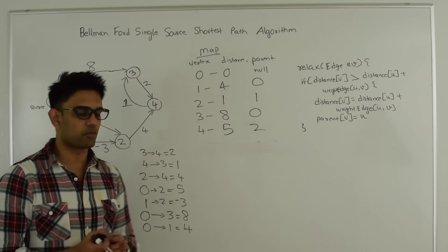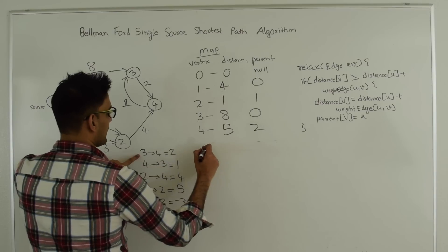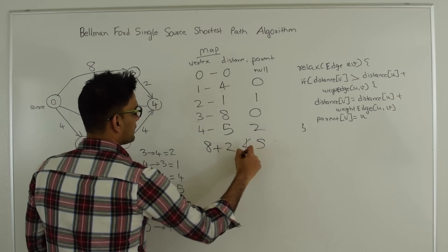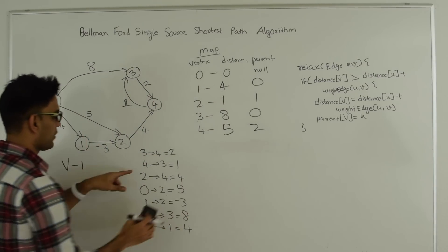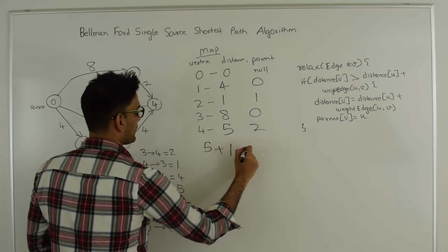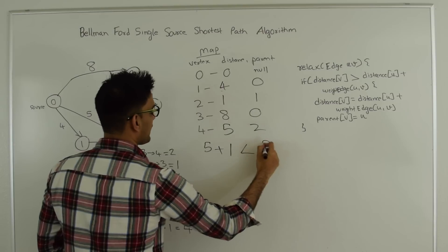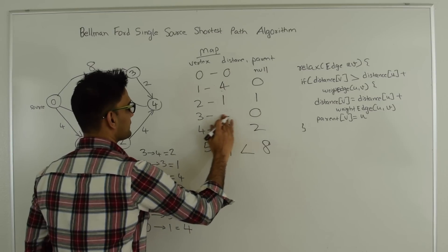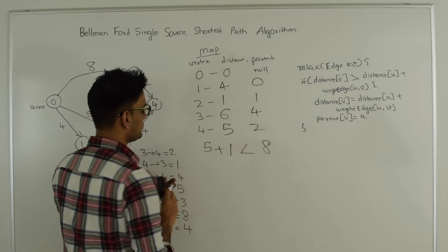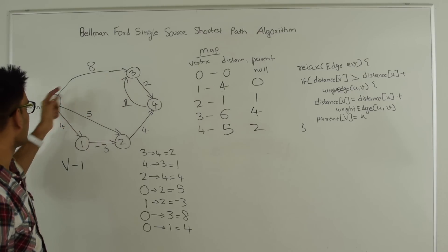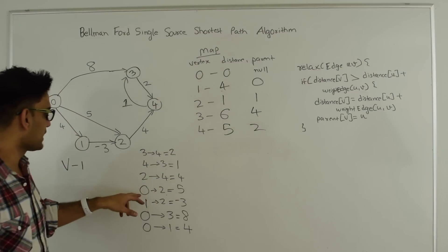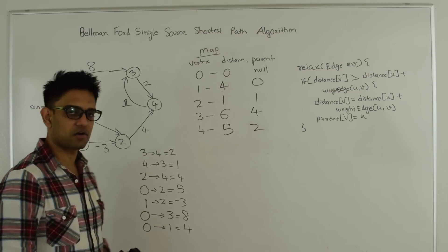Done with 3 repetitions, one more to go. Fourth iteration. Edge 3,4: distance of 3 is 8 plus weight 2 equals 10; current distance of 4 is 5, so no change. Edge 4,3: distance of 4 is 5 plus weight 1 equals 6, which is less than the current distance of 3 which is 8. So we found a shorter distance to reach 3, and we update it to 6 with parent 4. Edges 2,4, 0,2, and the rest do not change anything.